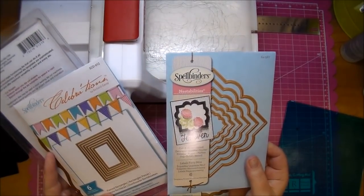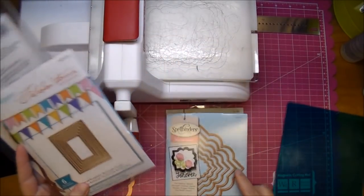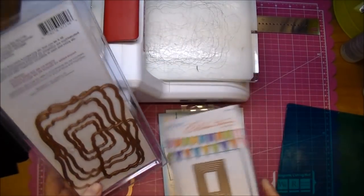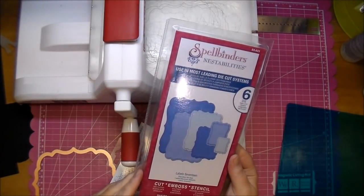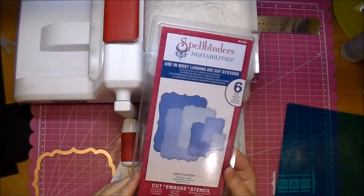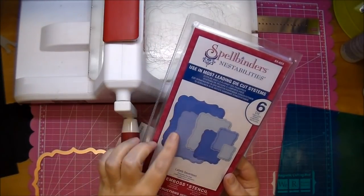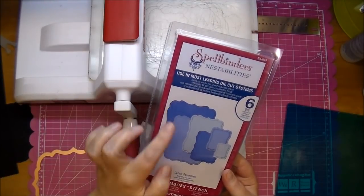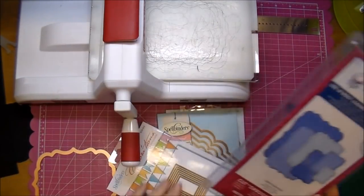That makes a great frame for your accordion fold out. Or you could use the Spellbinders Pierced Rectangles. You could also use the Spellbinders Nestabilities Label 17 because it has a solid outline. But what you want is also a frame out of it. So you would use the largest and the second largest to make a frame.